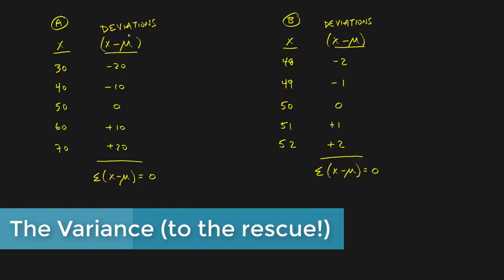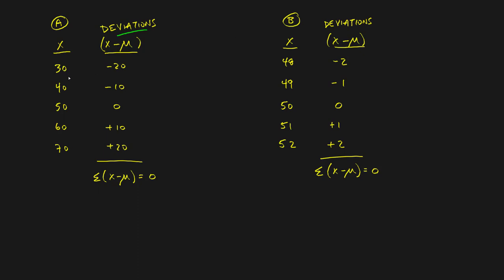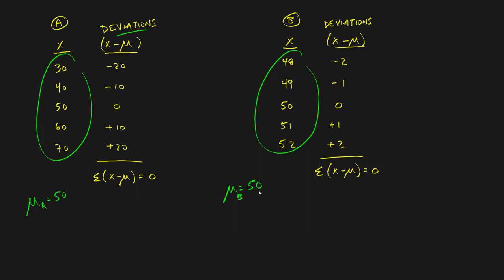In the last video I covered deviations from the mean. I showed an example of two different companies, Company A and Company B, with a list of employee salaries. Company A had salaries from thirty thousand up to seventy thousand. Both groups have an average of fifty thousand. What we were looking for was a measure of variation — a single value that would show that Company A's numbers are more spread out while Company B's are more clustered around fifty.